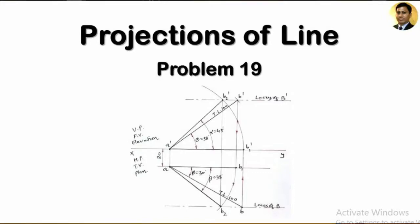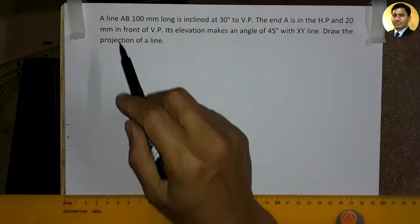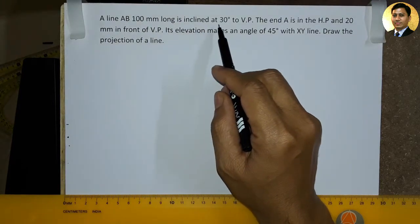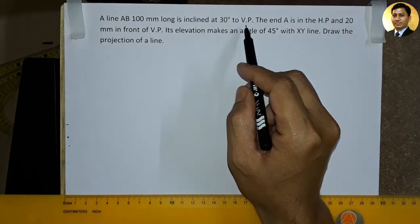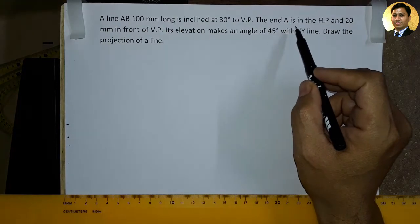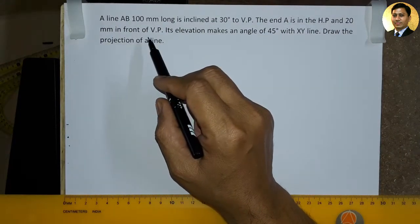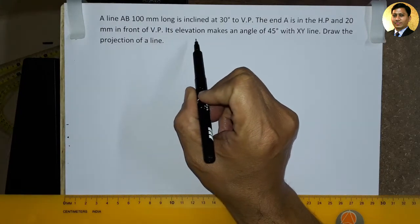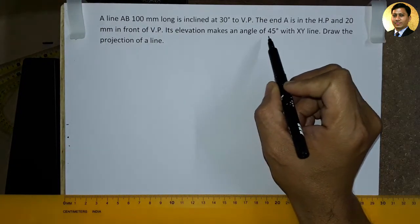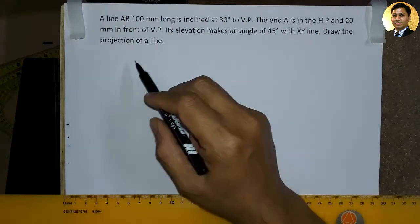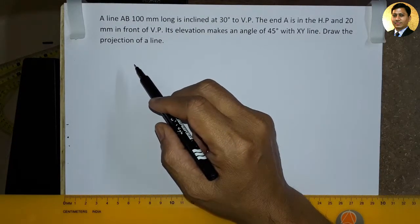Myself Niraj Patel. In this video lecture we will learn projections of line. The data is this: A line AB 100 mm long is inclined at 30 degree to VP. The end A is in the HP and 20 mm in front of VP. Its elevation makes an angle of 45 degree with XY line. Draw the projection of a line.